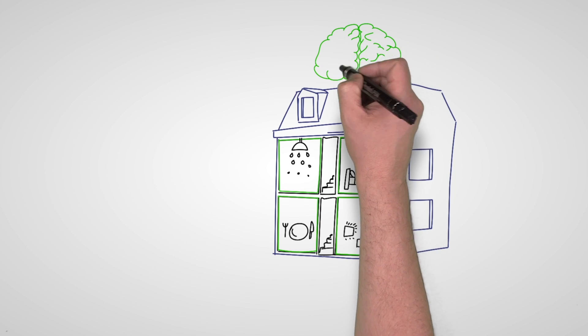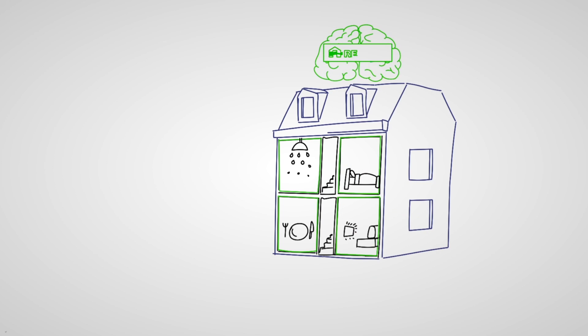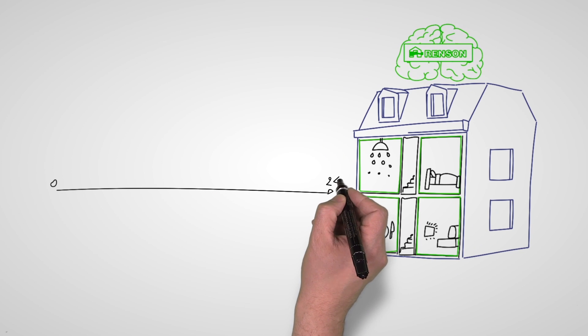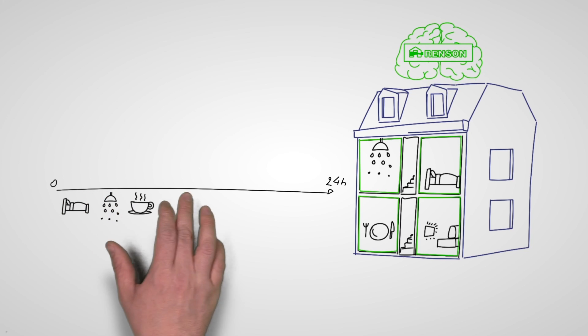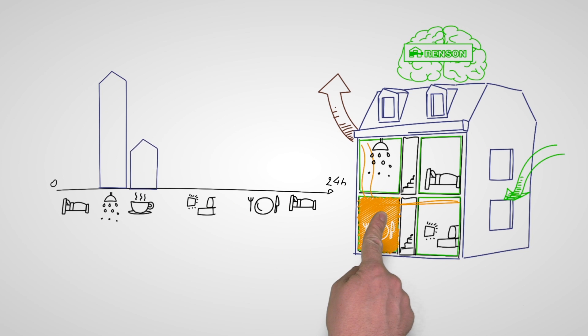This system will ensure polluted air is extracted when and where it is required. For example, the ventilation system will automatically go to a higher level in the bathroom when someone takes a shower or in the kitchen when breakfast is being cooked.